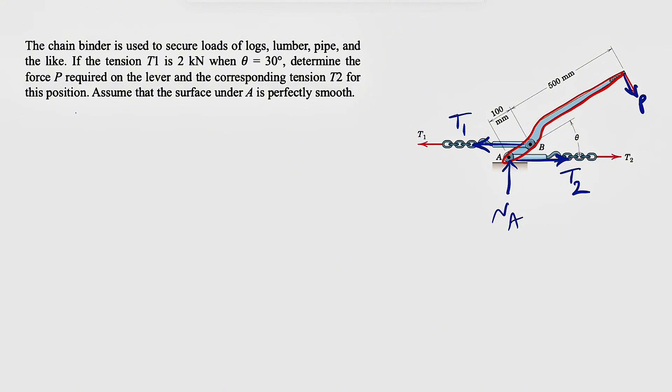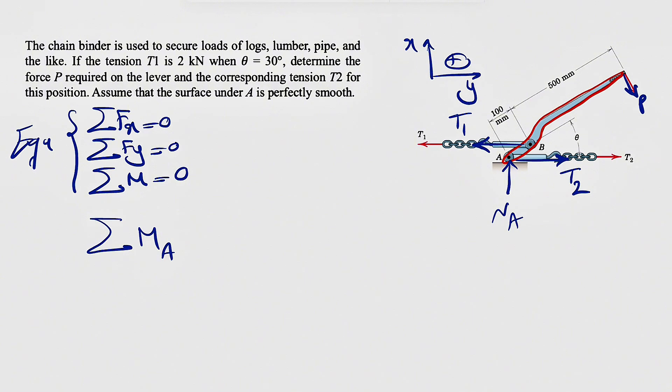We are in equilibrium, so we have our three equilibrium equations: sum of all forces in X equals zero, sum of all forces in Y equals zero, and sum of all moments about any point. Let's call our X and Y axes here. It makes sense to start with our moment equation, so if we do the moment about point A,